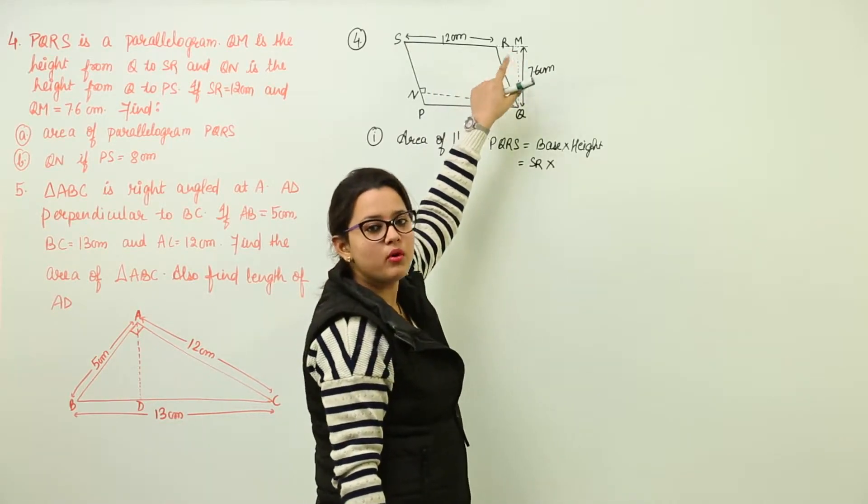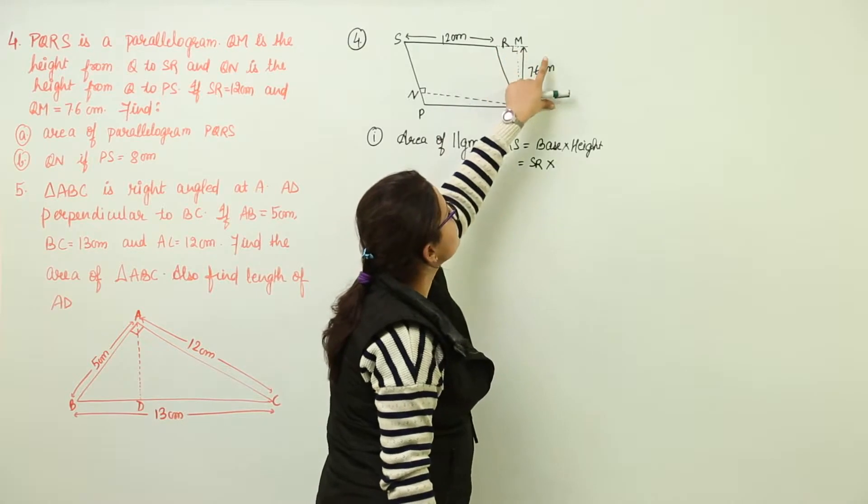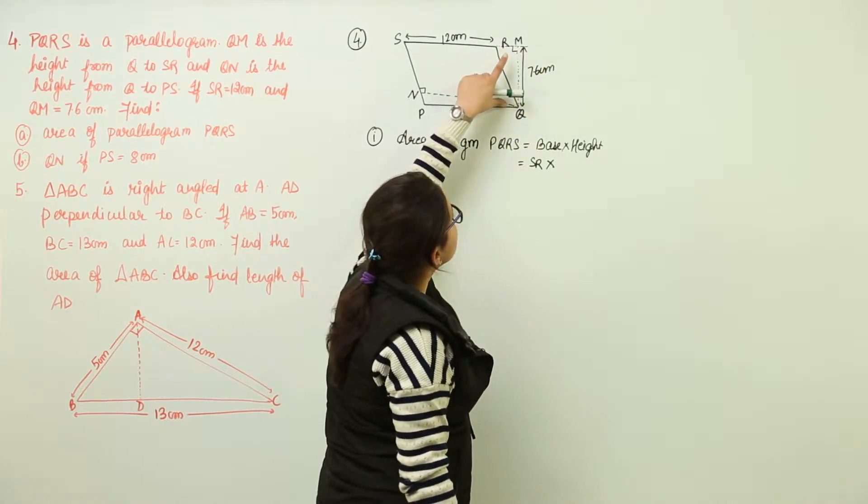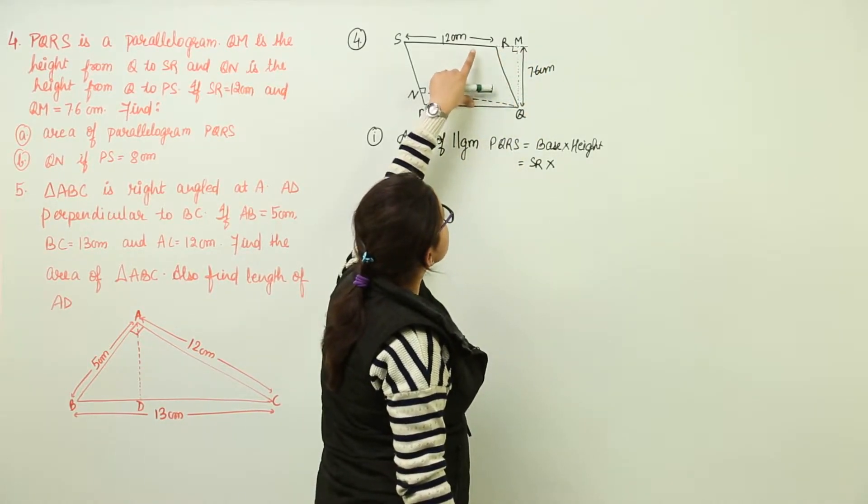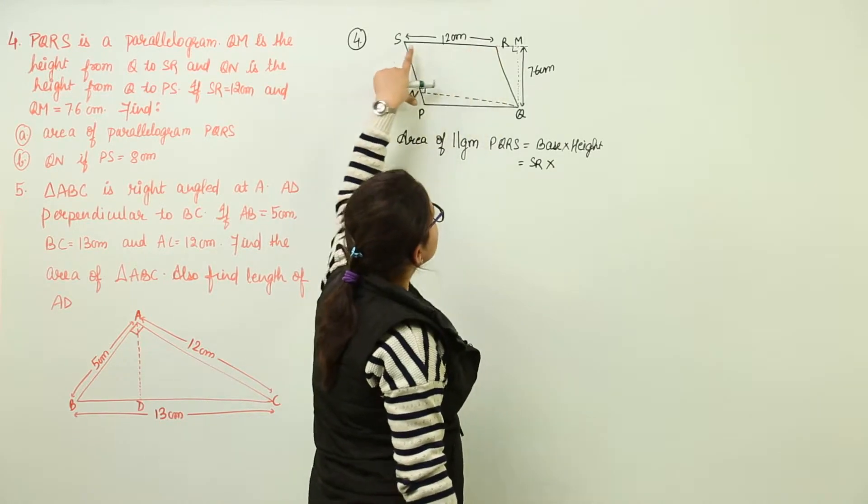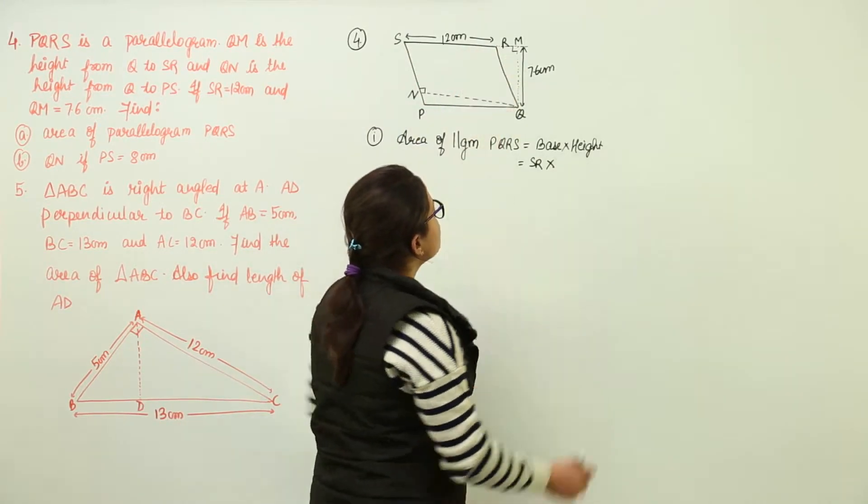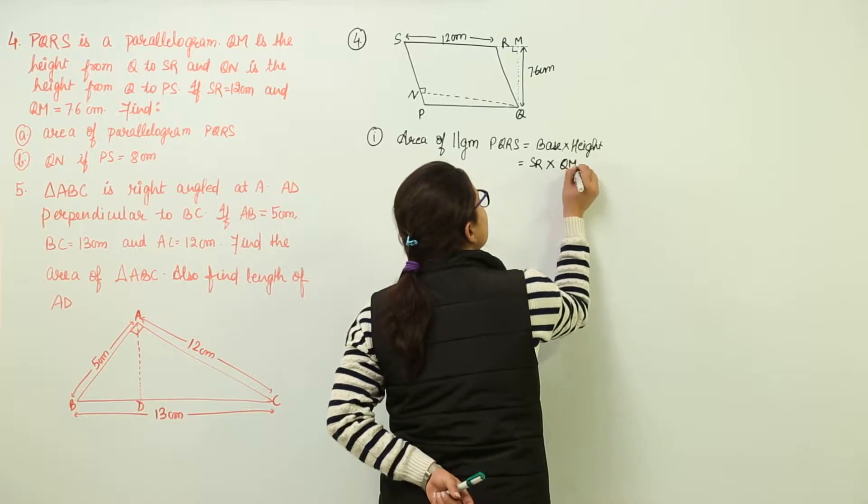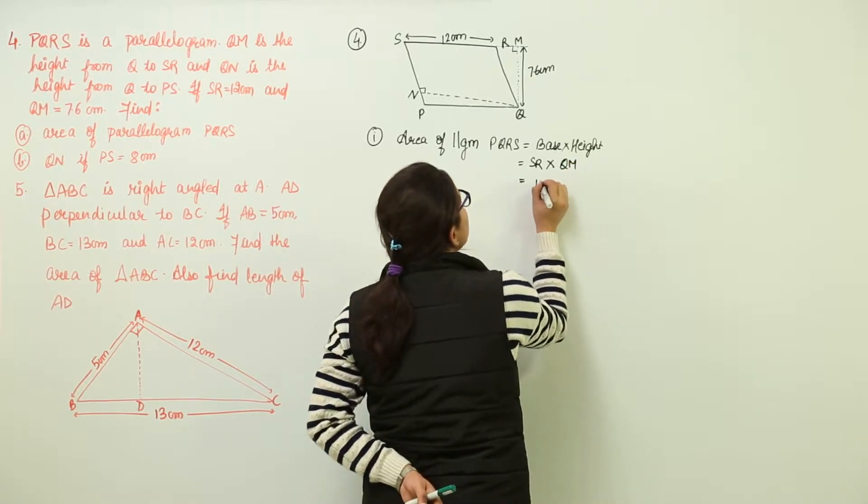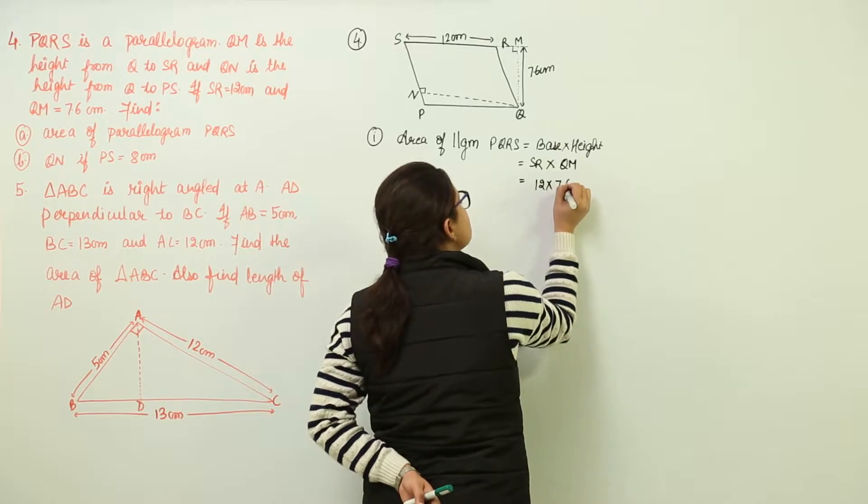As I discussed with you, height is not bothering that it is going out of the shape or not because the point Q is going to be at the same distance from SR all over. So we can represent QM as the height. Therefore, we are going to get the area as 12 into 7.6.